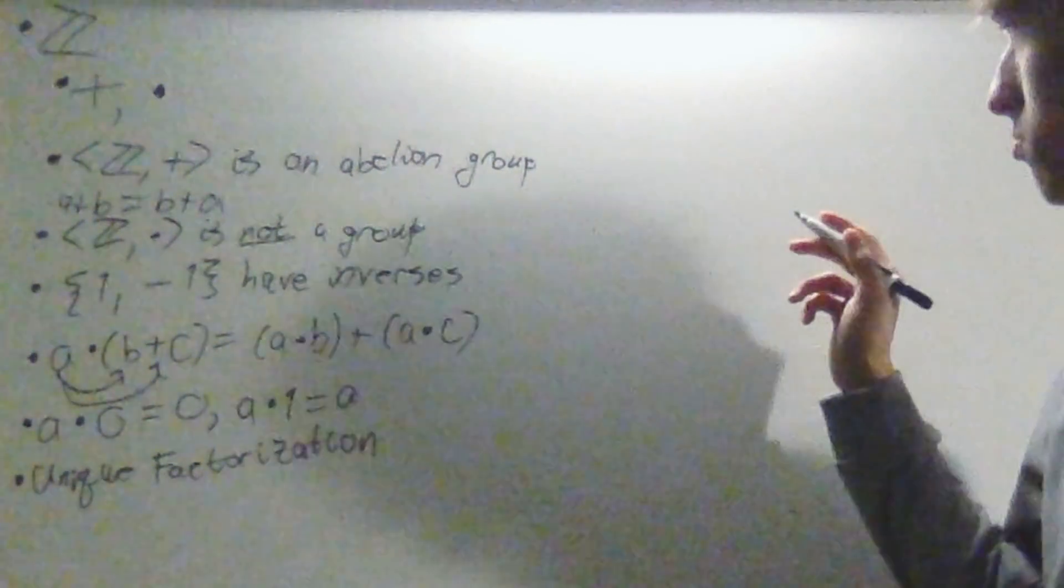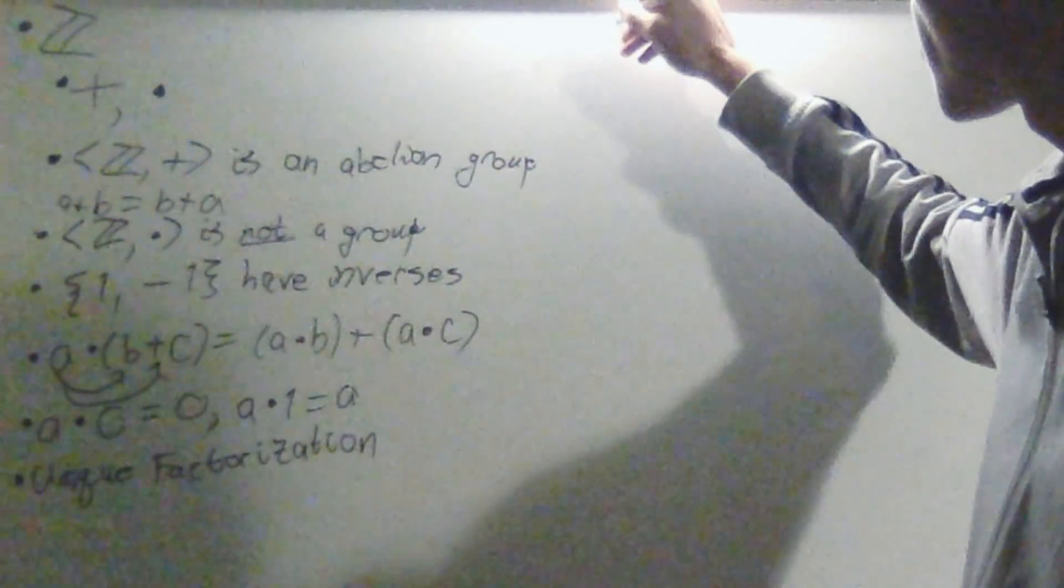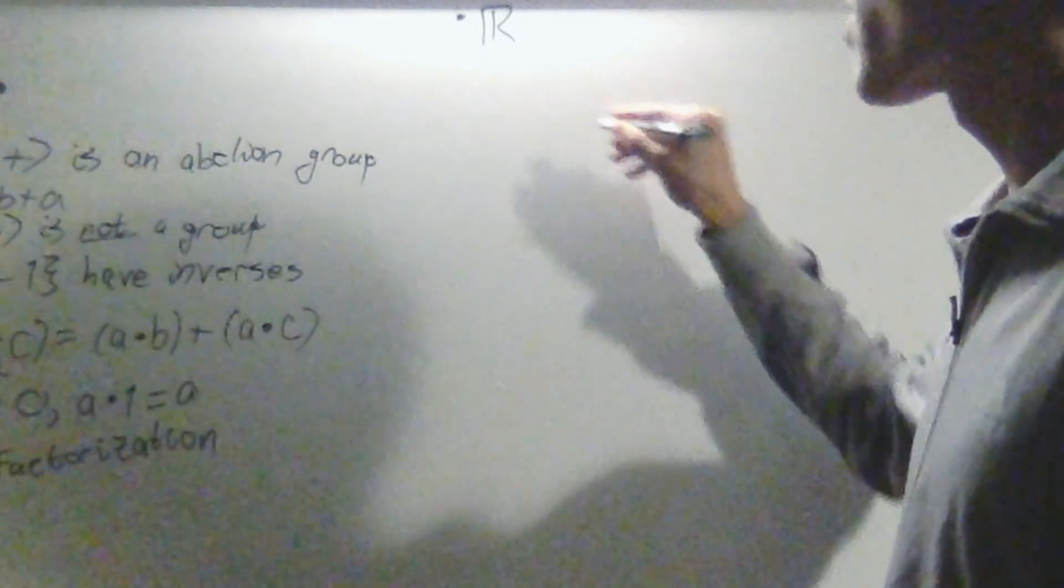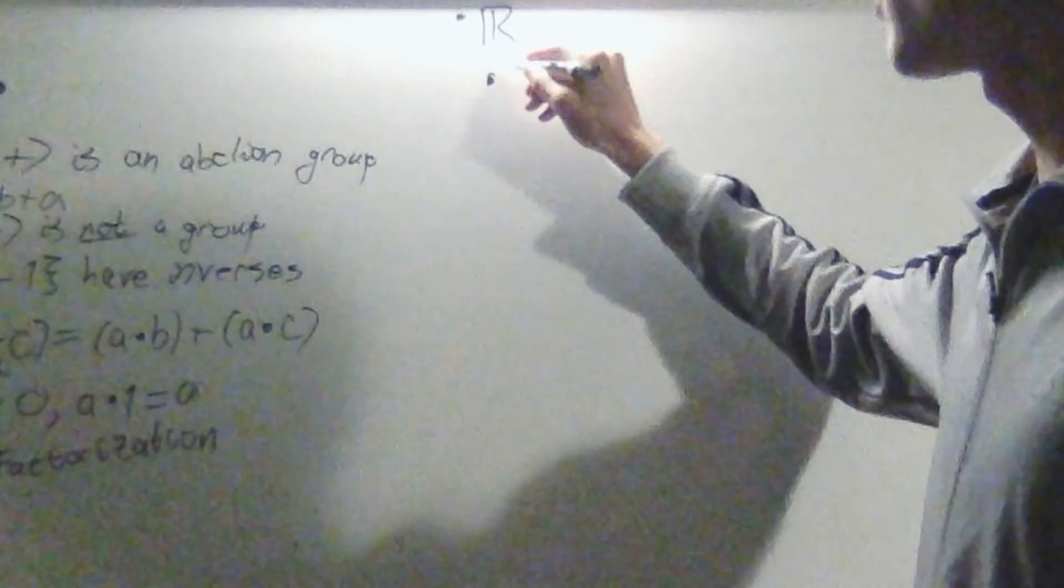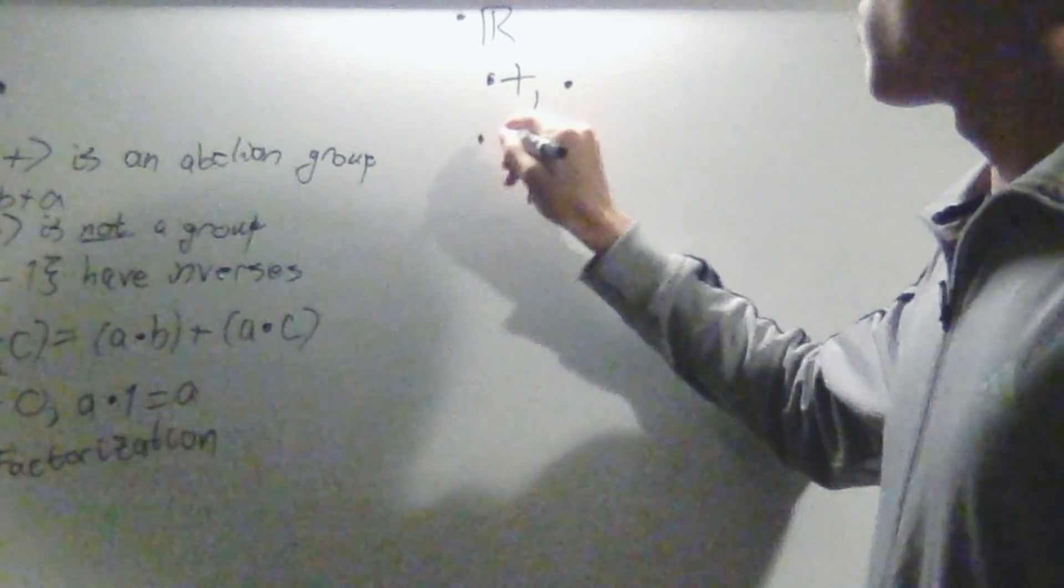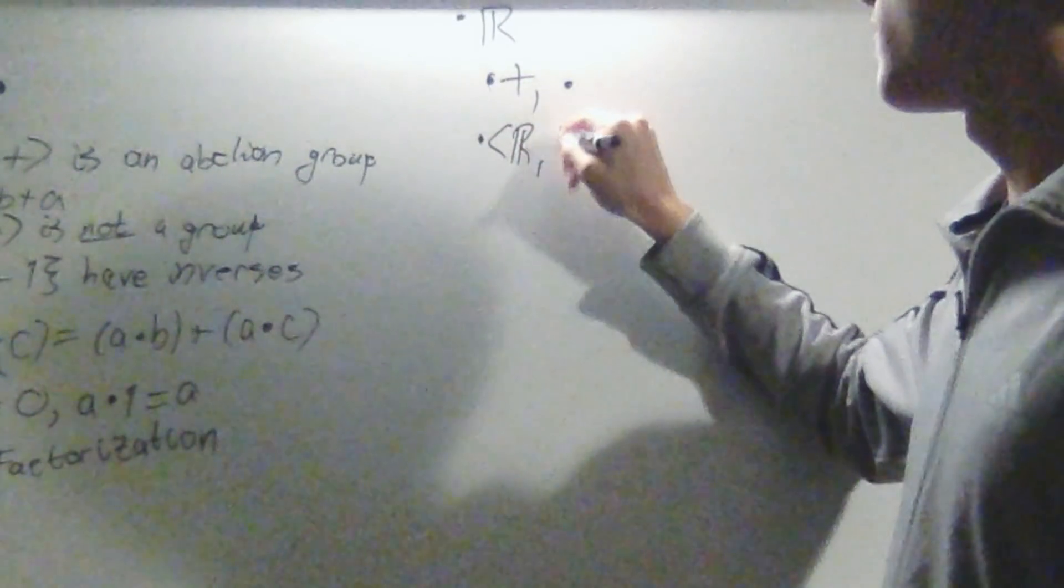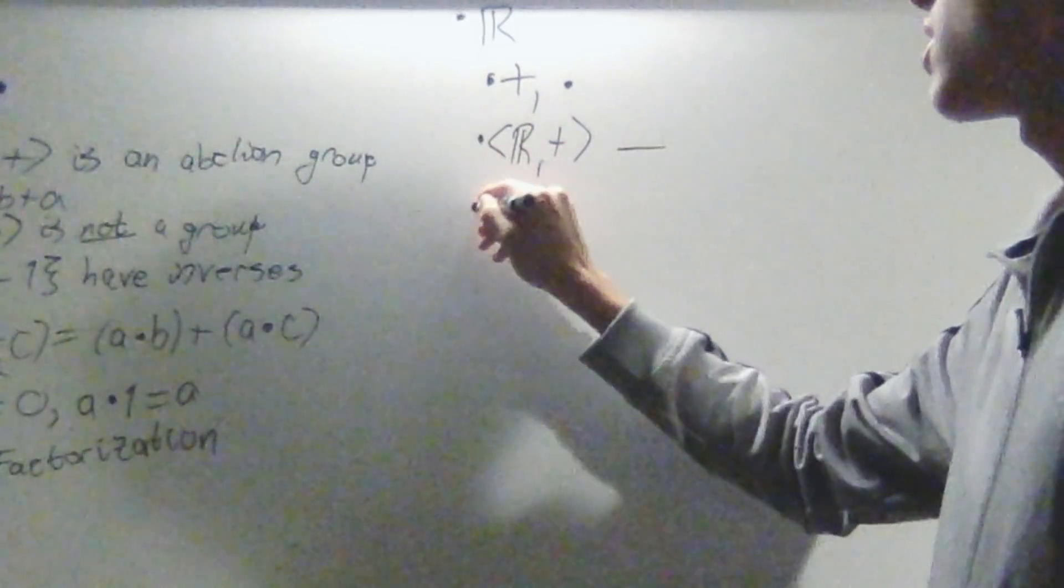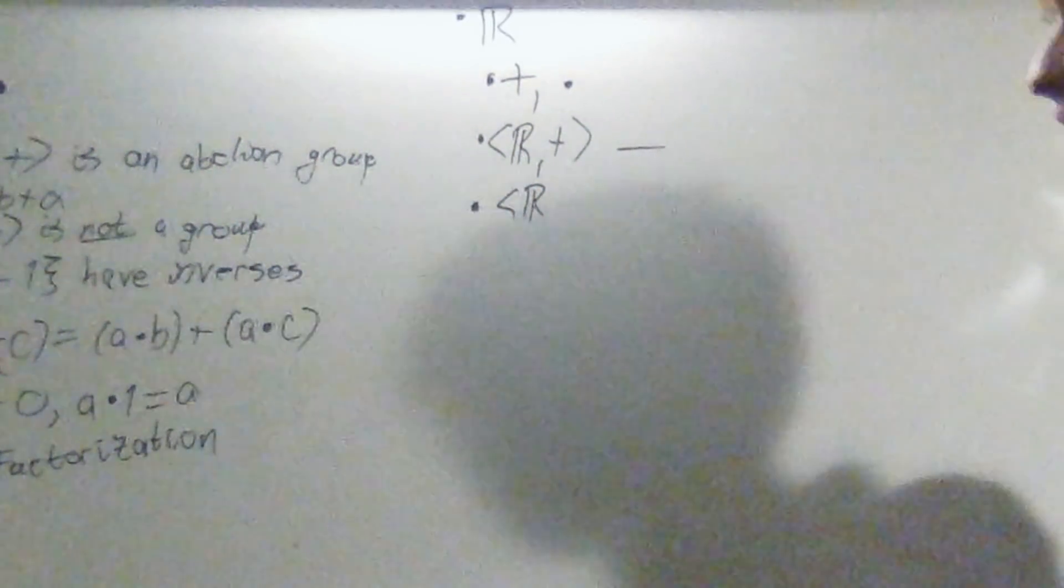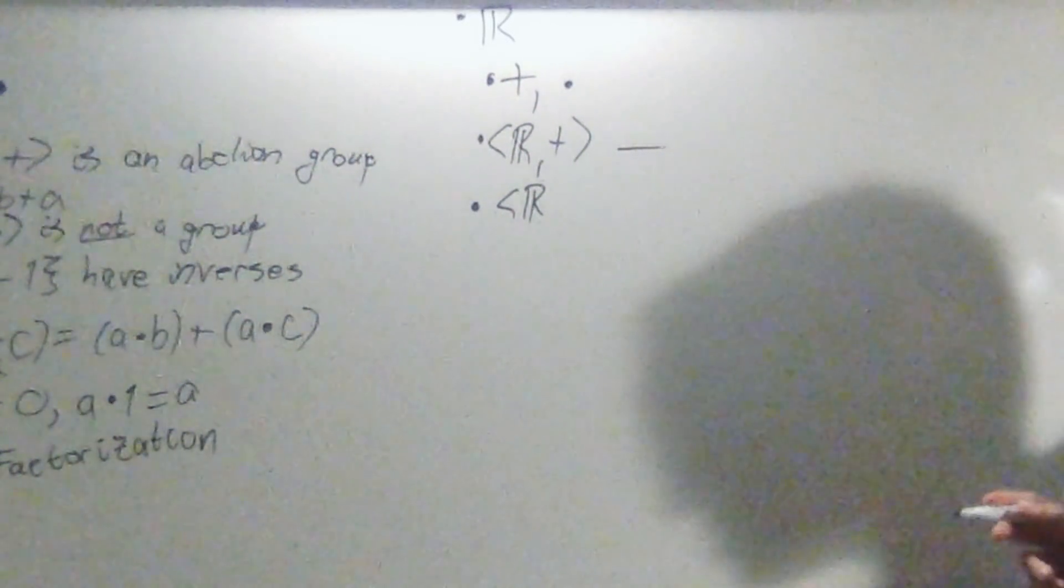What about some other sets that have two operations, like the real numbers? Let's go through everything that it has. It has plus and multiply, obviously. R under addition is also an abelian group. What about R under multiplication? Well, actually, R under multiplication is also not a group, but I'm going to remove 0.